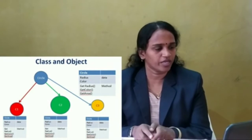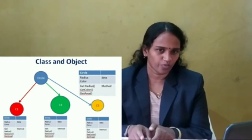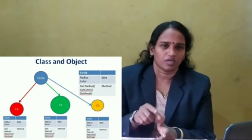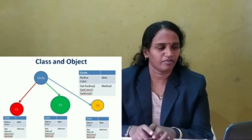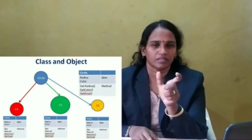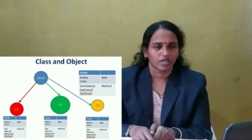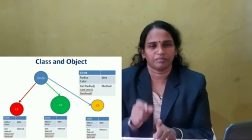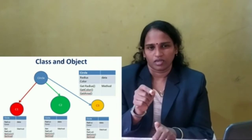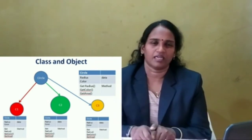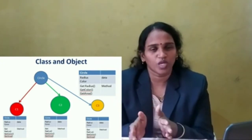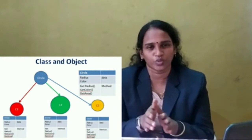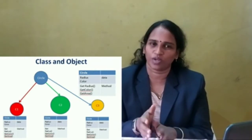Let us see the example of class and object. The blue color represents a circle. We are going to draw one circle. What data is needed to draw the circle? We need the area, which requires the radius and the formula pi r squared. If we know the value of r, we can automatically calculate the area of the circle. We are going to draw the circle using object oriented concepts.